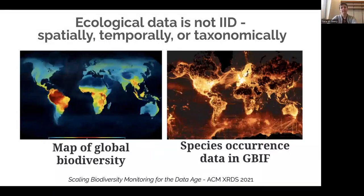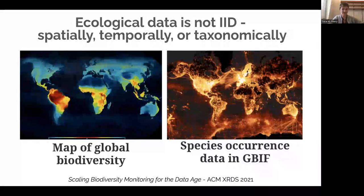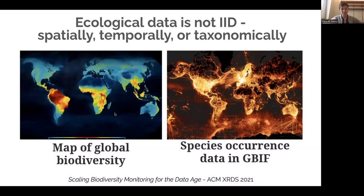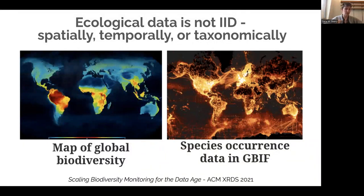Going back to how ecological data is not IID — independently and identically distributed — it's not IID in almost any dimension. IID is a fundamental assumption in machine learning that training and test data will be similarly distributed, and in ecology we break this basically always. It's not IID spatially — going from Kruger to Cape Town, the species distribution is very different. It's not IID temporally, nor even seasonally, because species migration is closely tied to specific environmental covariates year to year. And it's not IID taxonomically — there are huge biases in what taxa we tend to collect data for.